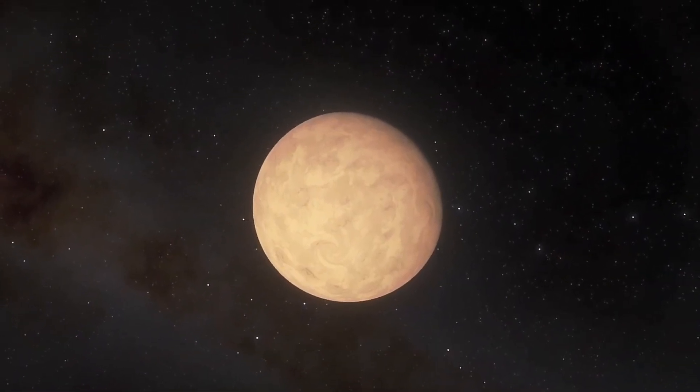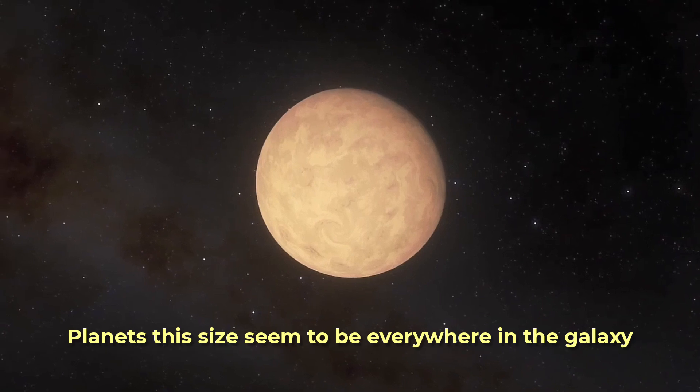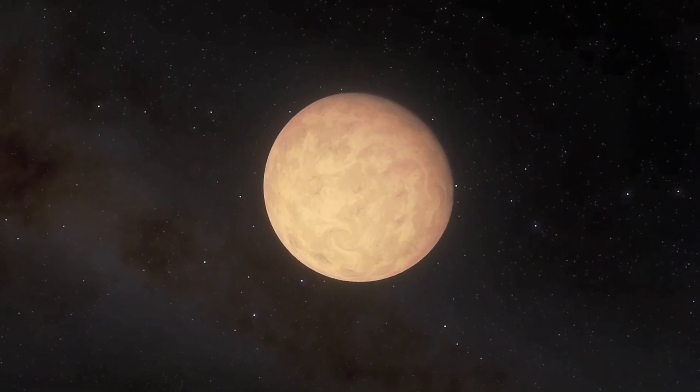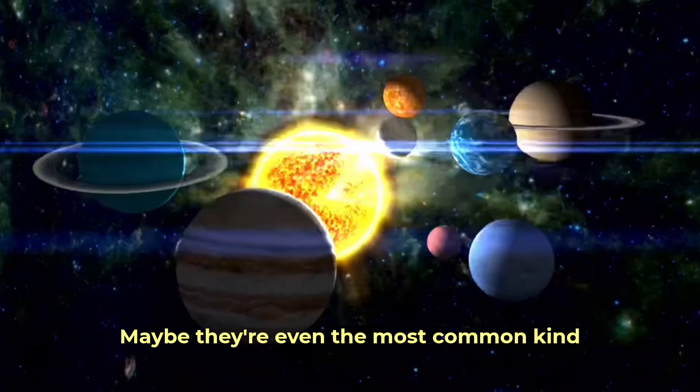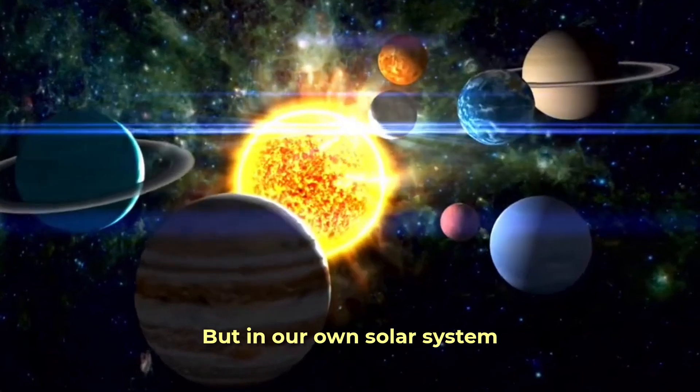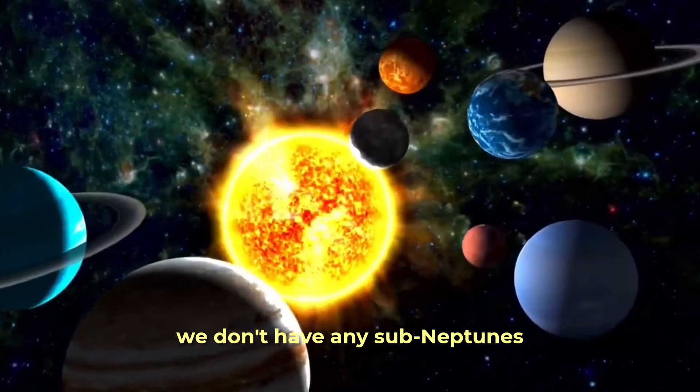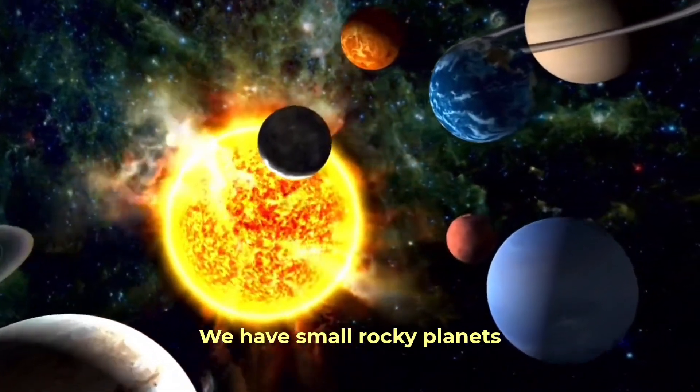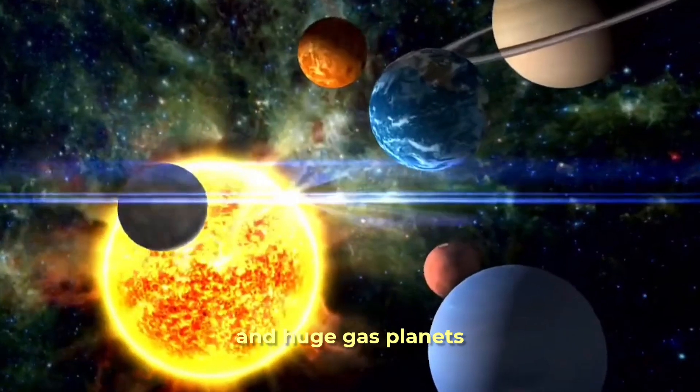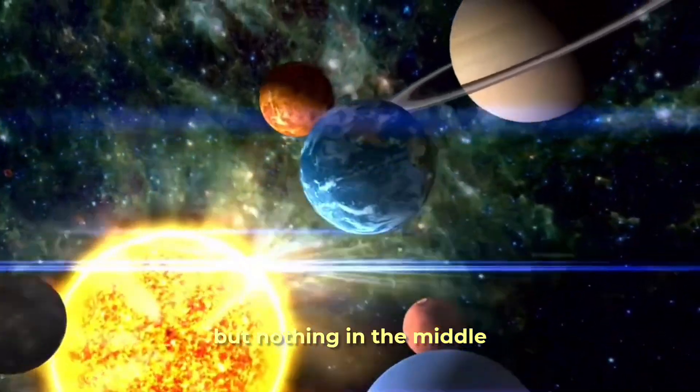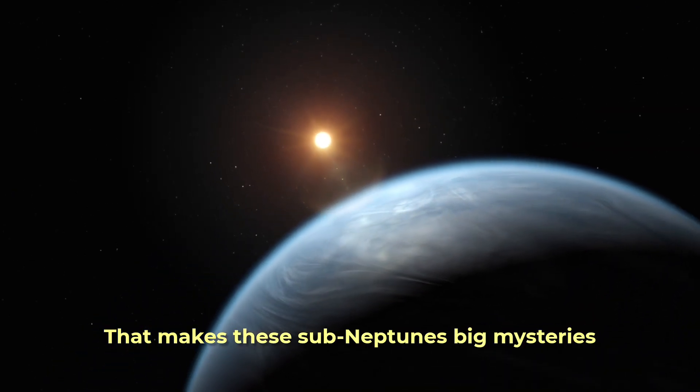Here's a funny thing. Planets this size seem to be everywhere in the galaxy. Maybe they're even the most common kind. But in our own solar system, we don't have any sub-Neptunes. We have small rocky planets and huge gas planets, but nothing in the middle. That makes these sub-Neptunes big mysteries.